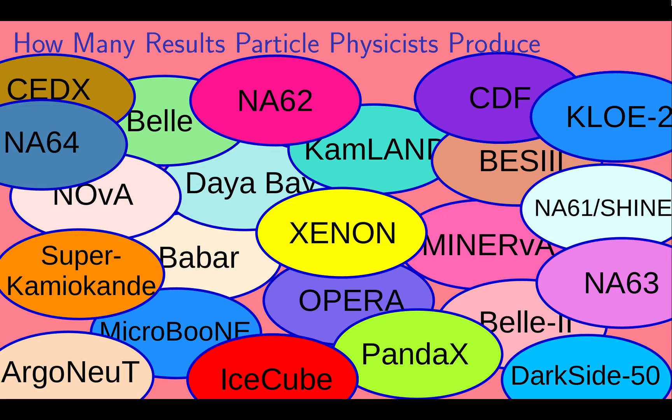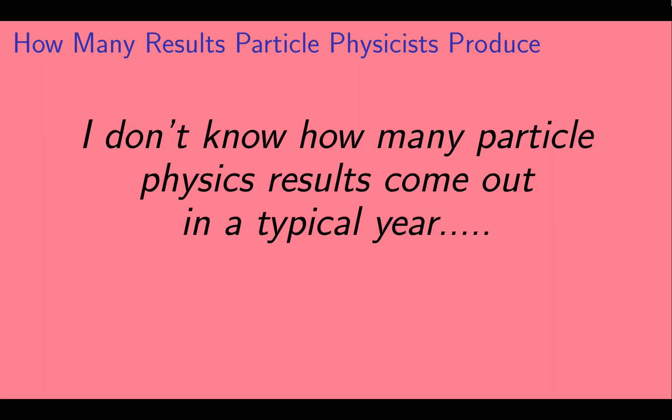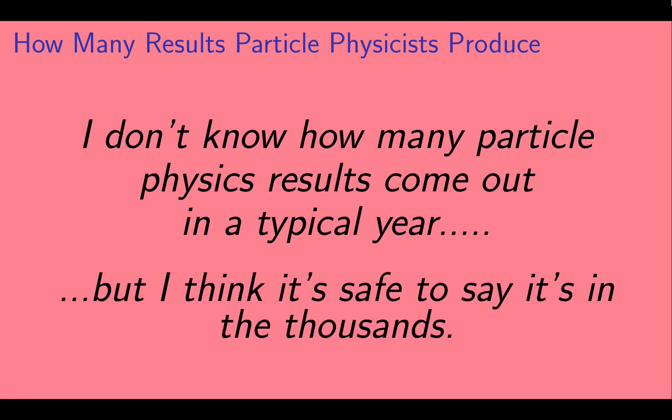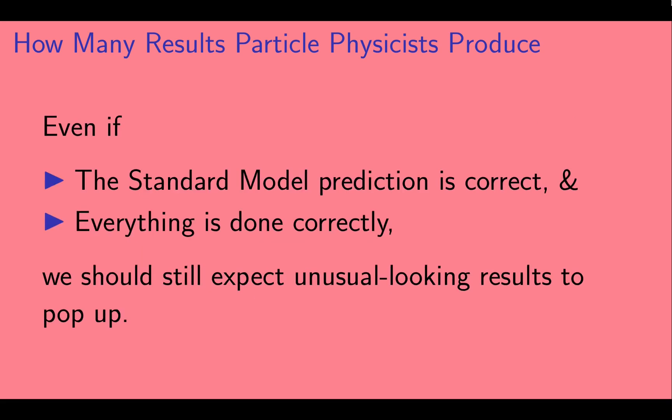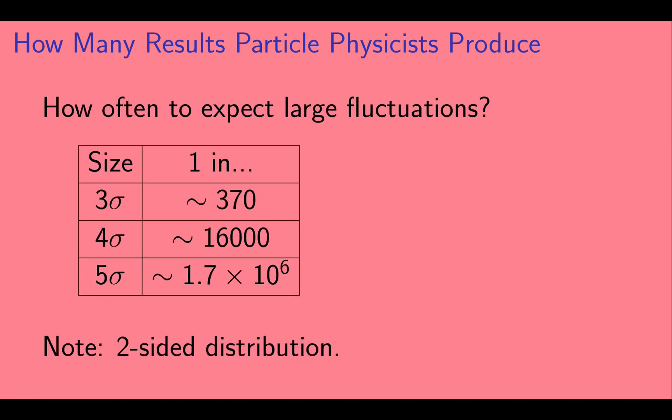So basically, I don't know how many particle physics results come out in a typical year. But I think it's safe to say it's in the thousands. Now, as we pointed out earlier, even if the standard model prediction is correct, and even if everything is done correctly, we should still expect unusual looking results to pop up. How often should we expect these fluctuations? We should expect to see a 3-sigma fluctuation in about 1 out of every 370 measurements, a 4-sigma fluctuation in about 1 out of every 16,000, and a 5-sigma fluctuation in about 1 out of every 1.7 million experiments.